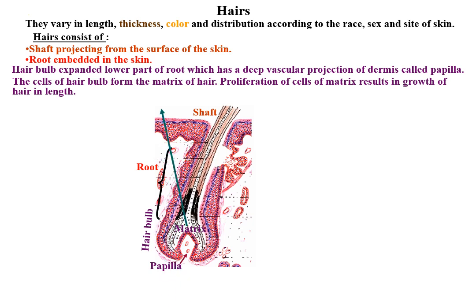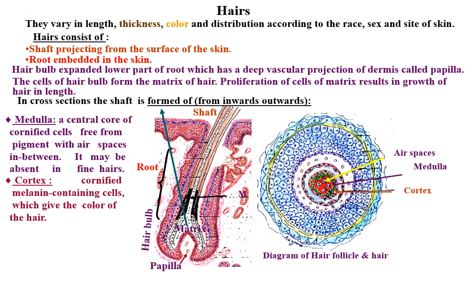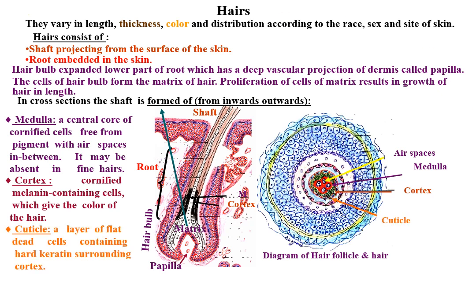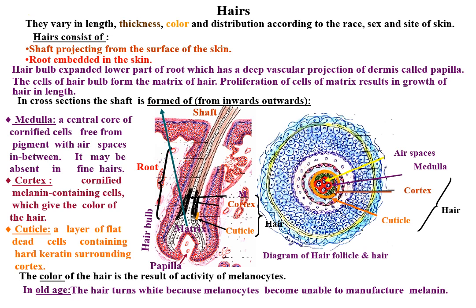In cross-section, the shaft is formed of, from inwards-outwards: the medulla, a central core of cornified cells free from pigment with air spaces in between, which may be absent in fine hairs; the cortex, formed of cornified melanin-containing cells which give the color of the hair; and the cuticle, formed of a layer of flat dead cells containing hard keratin surrounding the cortex. The color of the hair is the result of activity of melanocytes present in the matrix. In old age, hair turns white as melanocytes become unable to manufacture melanin.